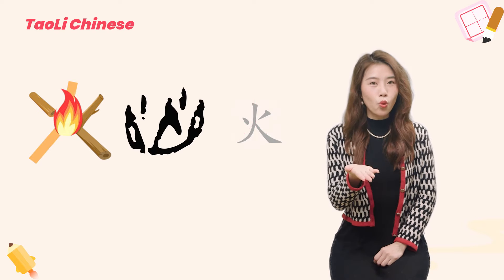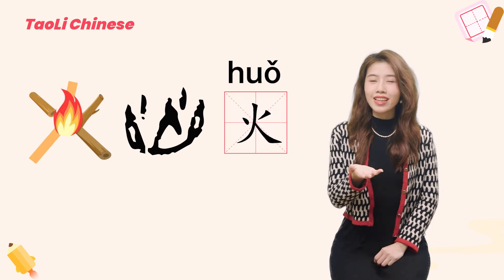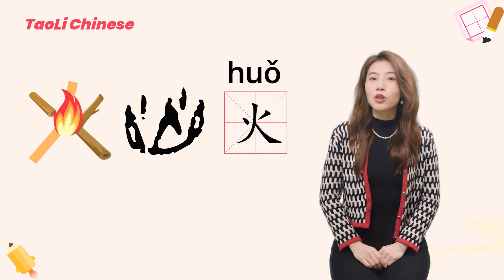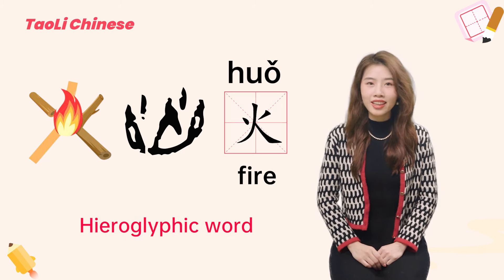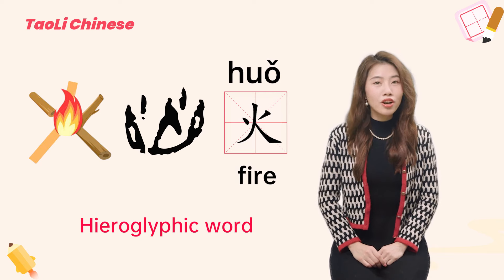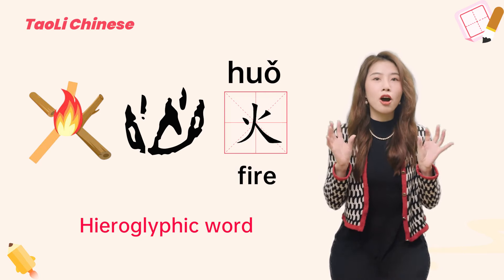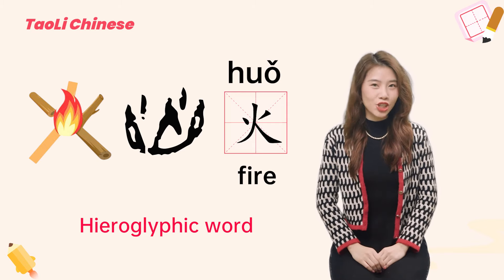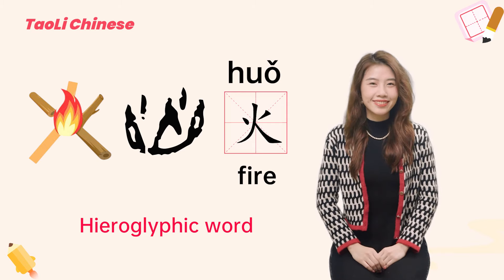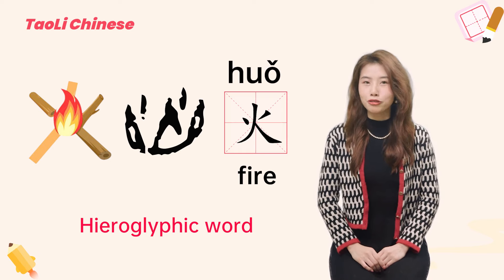Let's look at the first word. From previous lessons, we know that fire is a hieroglyphic character. The word 火 comes from the shape of a flame as it burns. You can see the picture — this is how the character 火 has evolved.